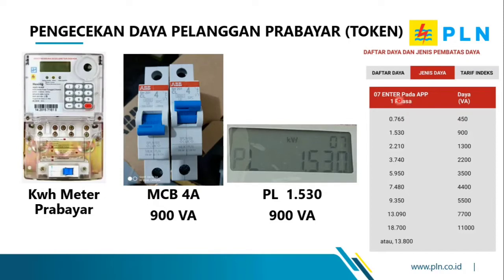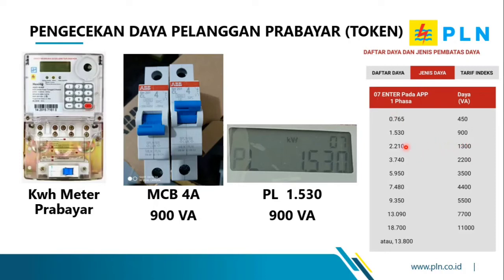Angka yang muncul pada KWH meter setelah menekan 07 enter itulah keterangan untuk informasi daya kontrak yang sesuai dengan daya PLN. Ketika kita tekan angka 07 enter pada KWH meter token atau listrik prabayar dan muncul angka 1.53, maka daya kontrak yang sesuai dengan KWH meter tersebut adalah 900 VA. Teman-teman atau elektrisan bisa membandingkan angka yang muncul — misalnya pada daya 1300 VA, ketika kita tekan 07 enter akan muncul angka 2.210.